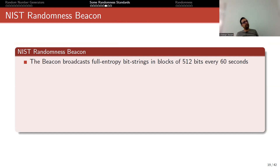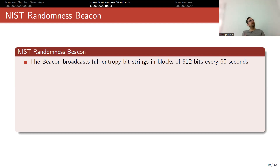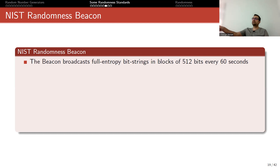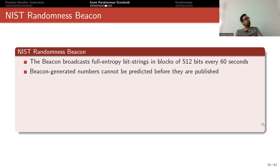Another example for randomness: assume that you need a random number for communication, but you don't trust each other and don't want either party to choose it themselves. You can use the NIST Randomness Beacon for this. NIST has a lab with equipment that broadcasts full-entropy bit strings in blocks of 512 bits every 60 seconds. Every 60 seconds they generate a random number on their web page. Since it is publicly available, you cannot use it as a secret key, but you can use it as a nonce. In a communication, you can say the next nonce will be the next random number the NIST beacon produces. Beacon-generated numbers cannot be predicted before they are published, if NIST's setup is completely secure.